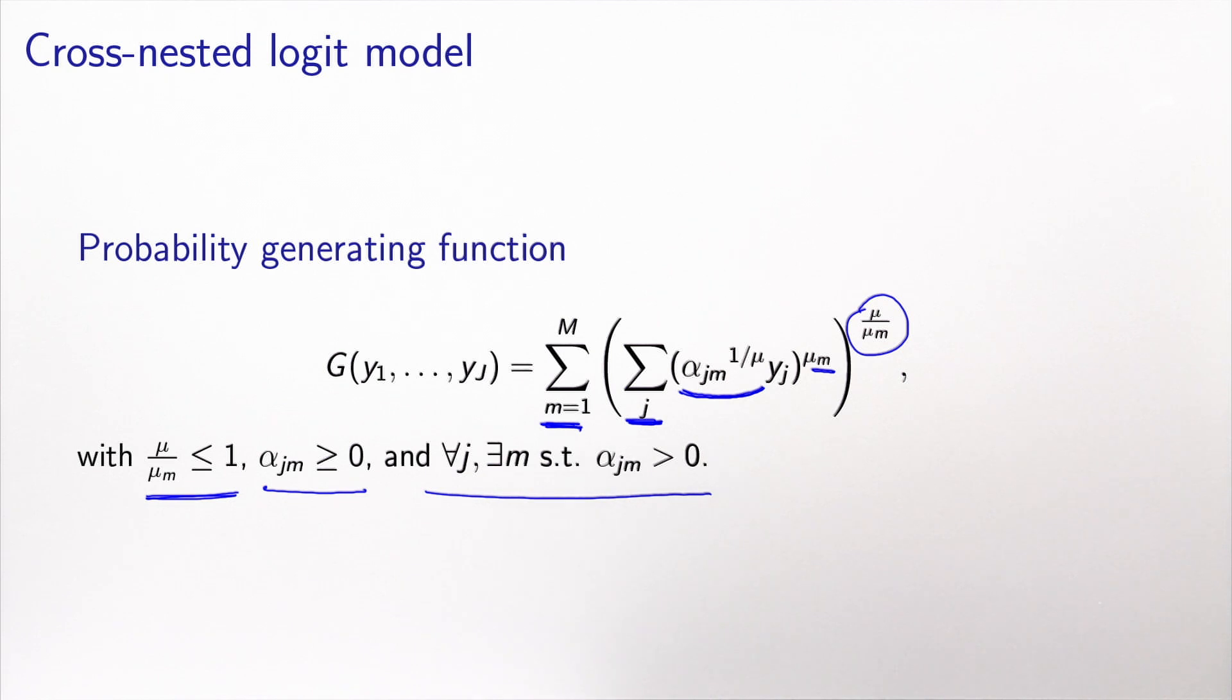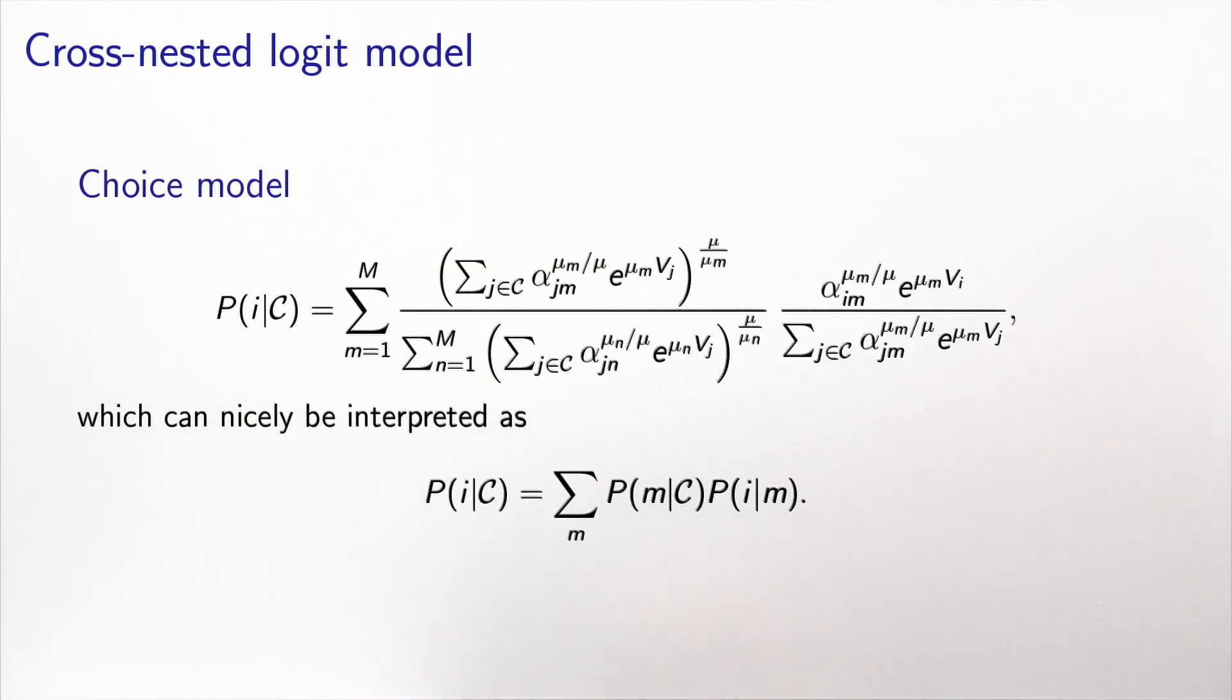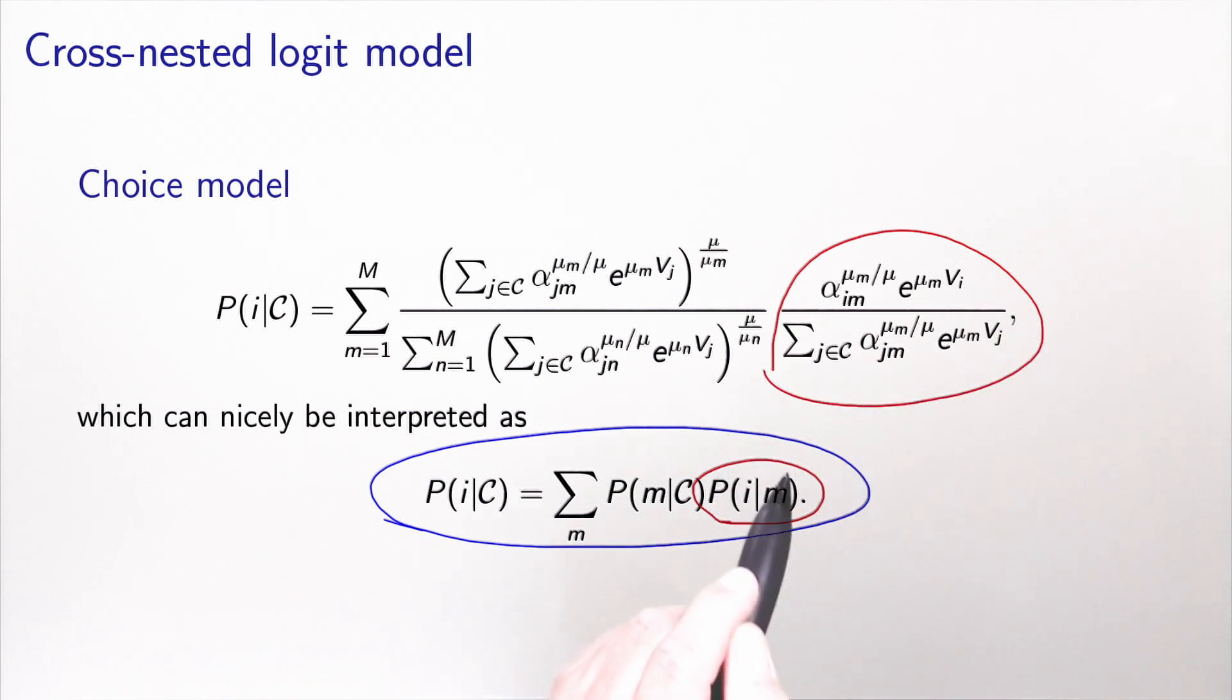So this is the equation. A lot of Greek letters here. But basically, the structure of this equation is written here. So the probability to choose alternative i is the sum over all nests of the probability of the nest times the probability to choose i within the nest. This is basically this. And as you can see, this is a version of the logit model where you have some weights associated with the membership parameters. And the nest choice is basically this.